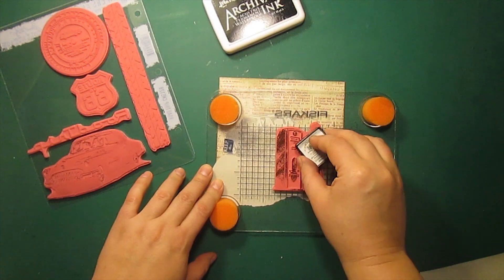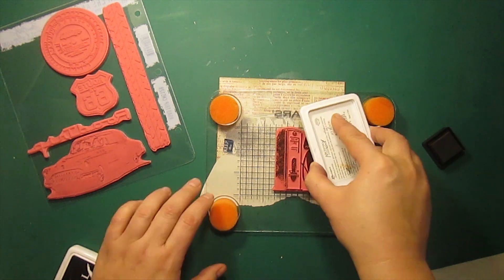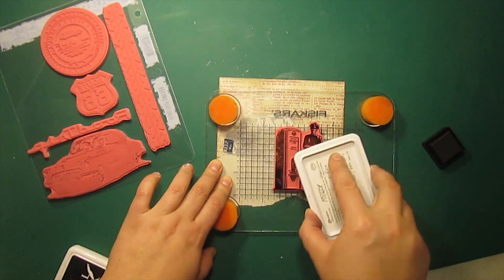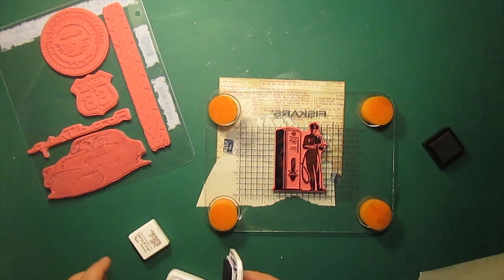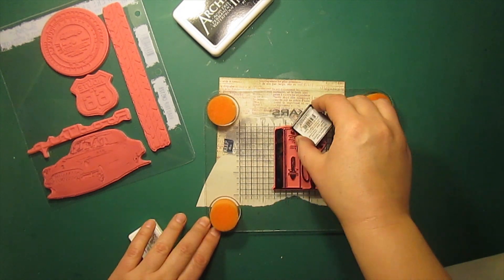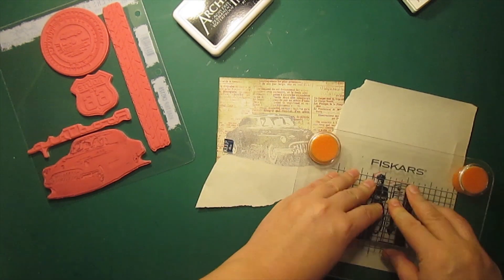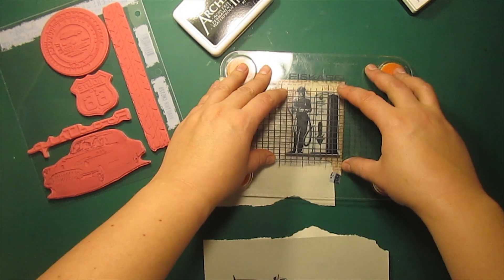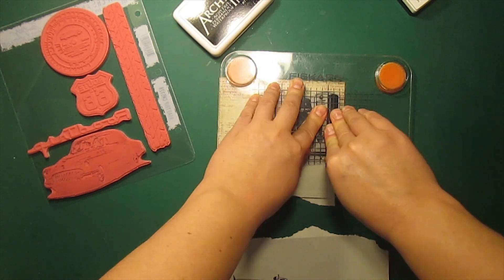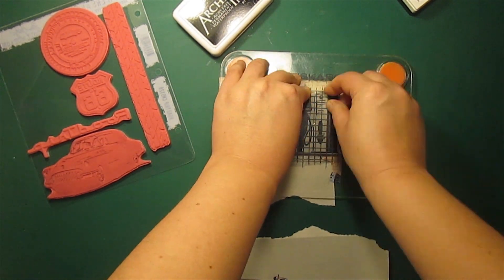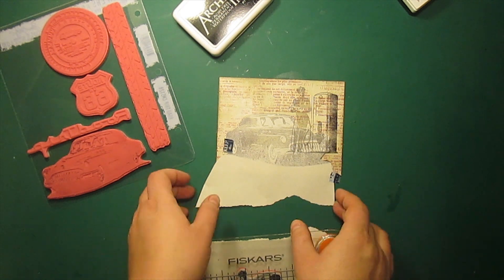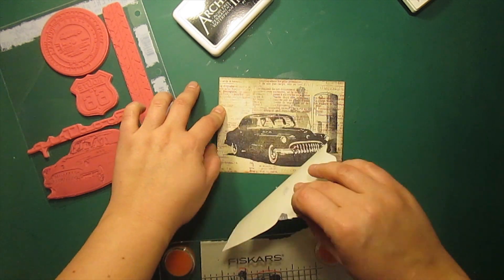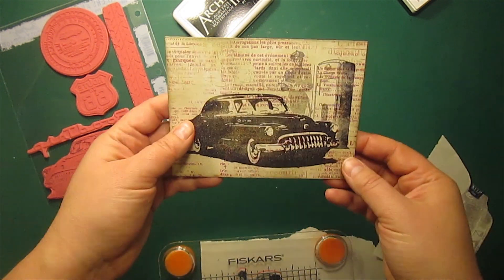To stamp the next image from the set I'm applying the same two ink colors exactly the same way I did for the car. The only difference is I'm going to stamp it off on a scrap piece of paper first and then use a second generation stamping on the card. Now I can remove the mask and here I have the little scene.